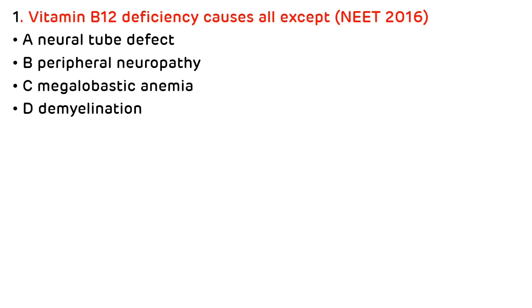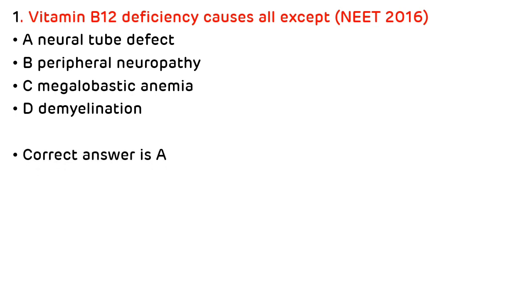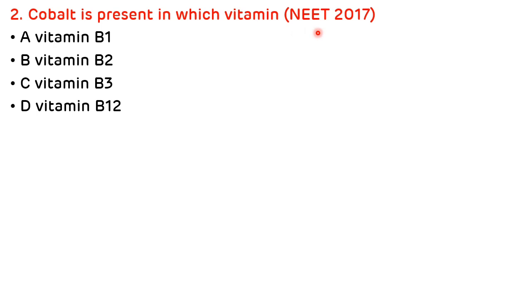Now we will discuss multiple choice questions. Question 1 (NEET 2016): Vitamin B12 deficiency causes all except — options: neural tube defect, peripheral neuropathy, megaloblastic anemia, and demyelination. Neural tube defect is caused by folic acid deficiency, so the correct answer is A. Question 2 (NEET 2017): Cobalt is present in which vitamin — options B1, B2, B3, B12. Cobalt is present in vitamin B12, so the correct answer is D.